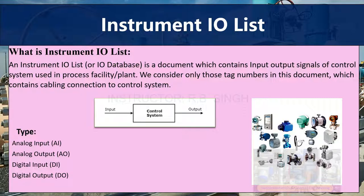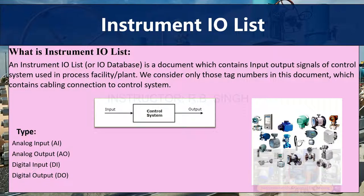How many types of signals do we consider? There are generally four types of signals in this IO List: Analog Input denoted by AI, Analog Output denoted by AO, Digital Input denoted by DI, and Digital Output denoted by DO. On the right side, you can see pictures of field instruments which can produce these signals, and some of the symbols are IO types like AI, AO, DI, and DO.